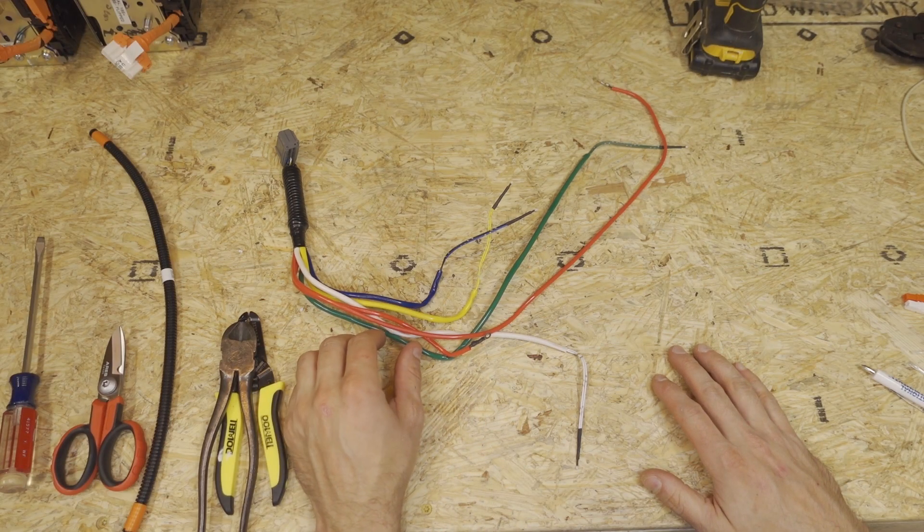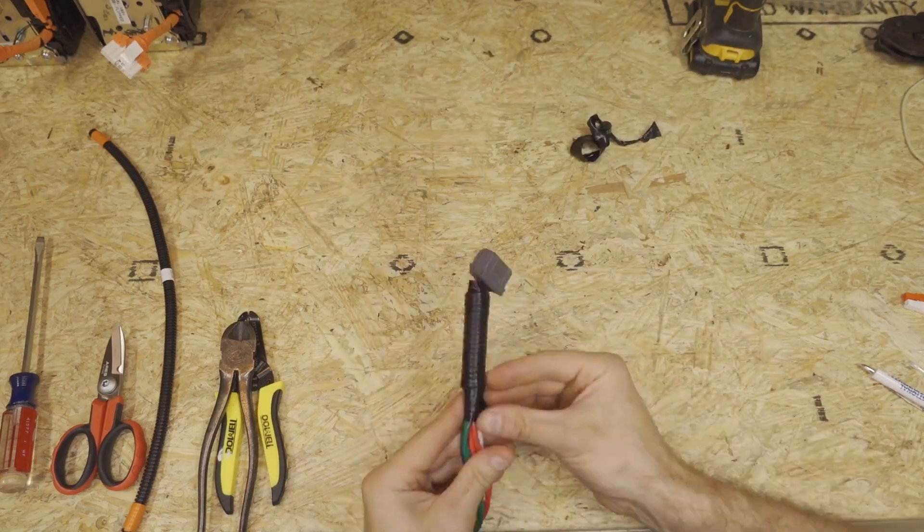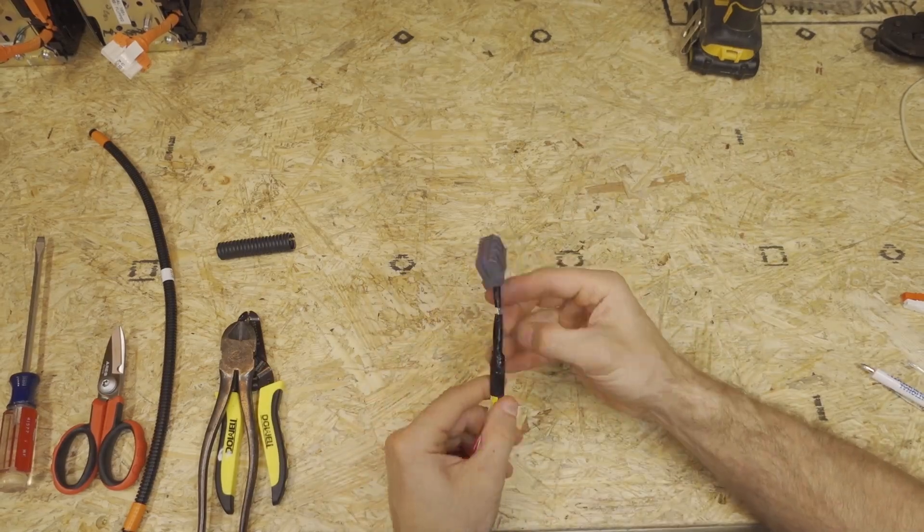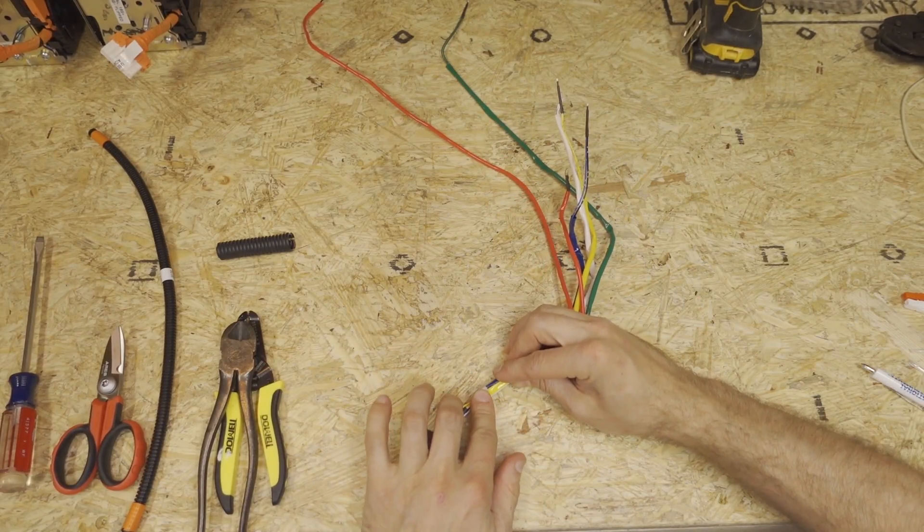To modify the temperature sensor harness, we're first going to remove the electric tape and the conduit. And now we'll cut the zip tie off.